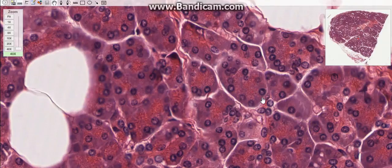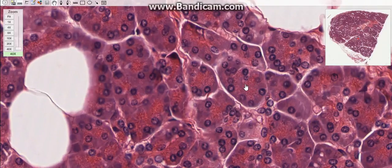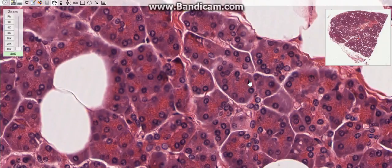The zymogen granules are secretory vesicles containing inactive precursors of digestive enzymes. They are activated in the lumen of the digestive canal when introduced into the duodenum.